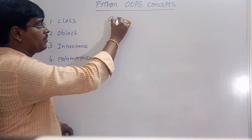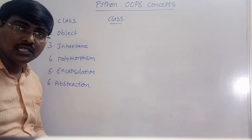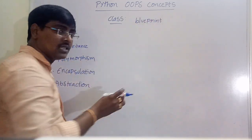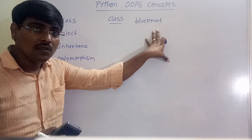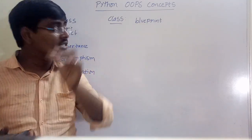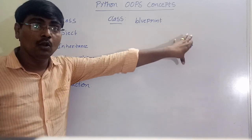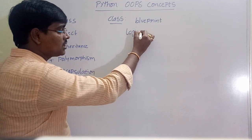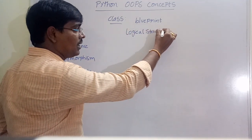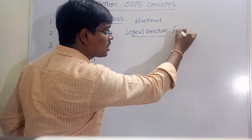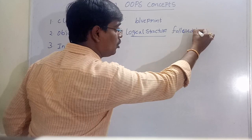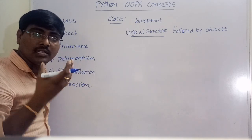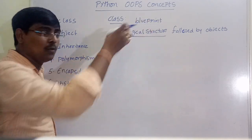First we will define class. A class is simply a blueprint, followed by a set of objects. A class defines a logical structure, and this structure is followed by objects.